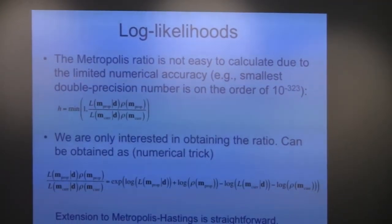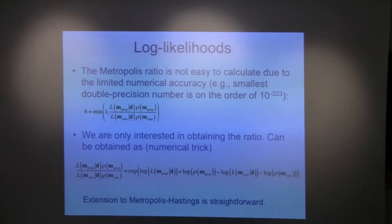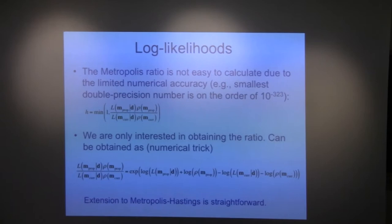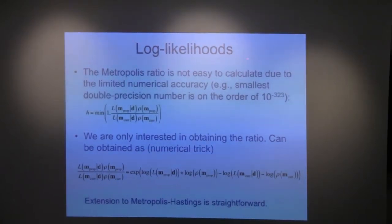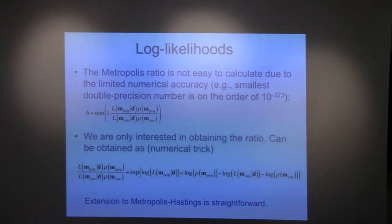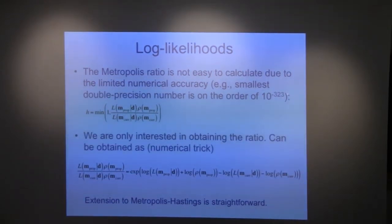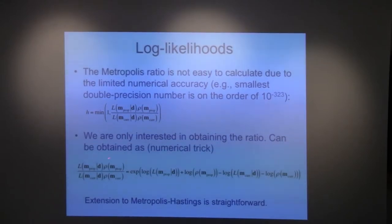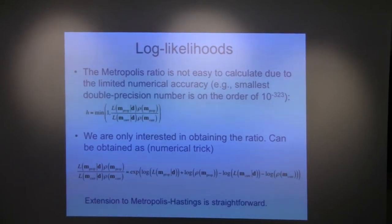An important numerical trick: work with log likelihoods rather than raw likelihoods. A double precision number in MATLAB is around 10⁻³⁰⁰, but your likelihoods in high dimensions may be much smaller. Working in log space avoids underflow. This reformulation is what everyone does in practice, though it's not always written explicitly in papers.